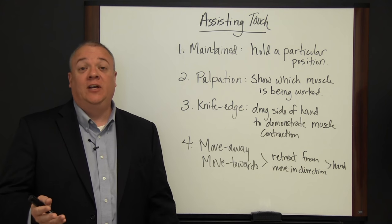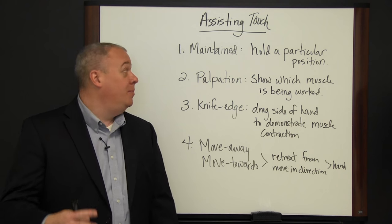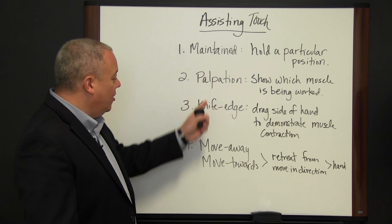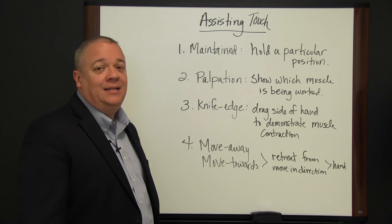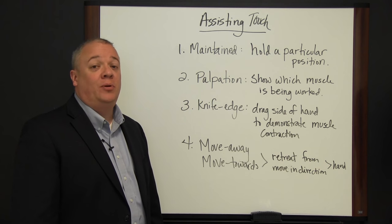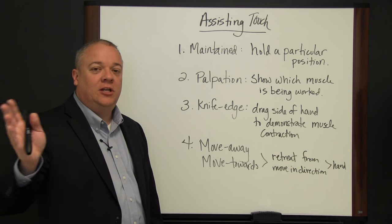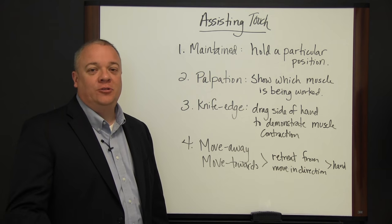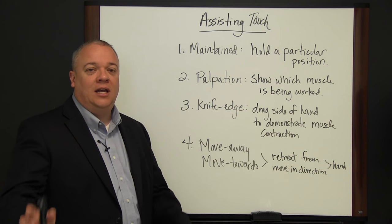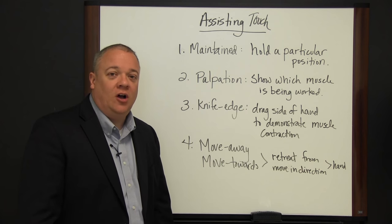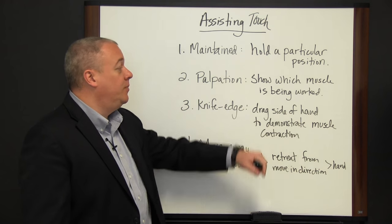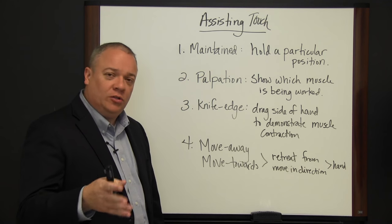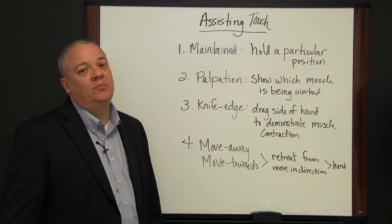Today we're going to talk about assisting touch — how touch can help in therapy and helping others, and specific touches and holds to teach and instruct people. First, maintained touch: using your hand — either holding their hand or touching an appropriate place on their body — to help them maintain or hold a position. You're using your hand to say 'hold this position, don't move.' A palpation touch is a soft touch of your fingertips, usually showing which muscle group is being worked — gentle, not forceful.